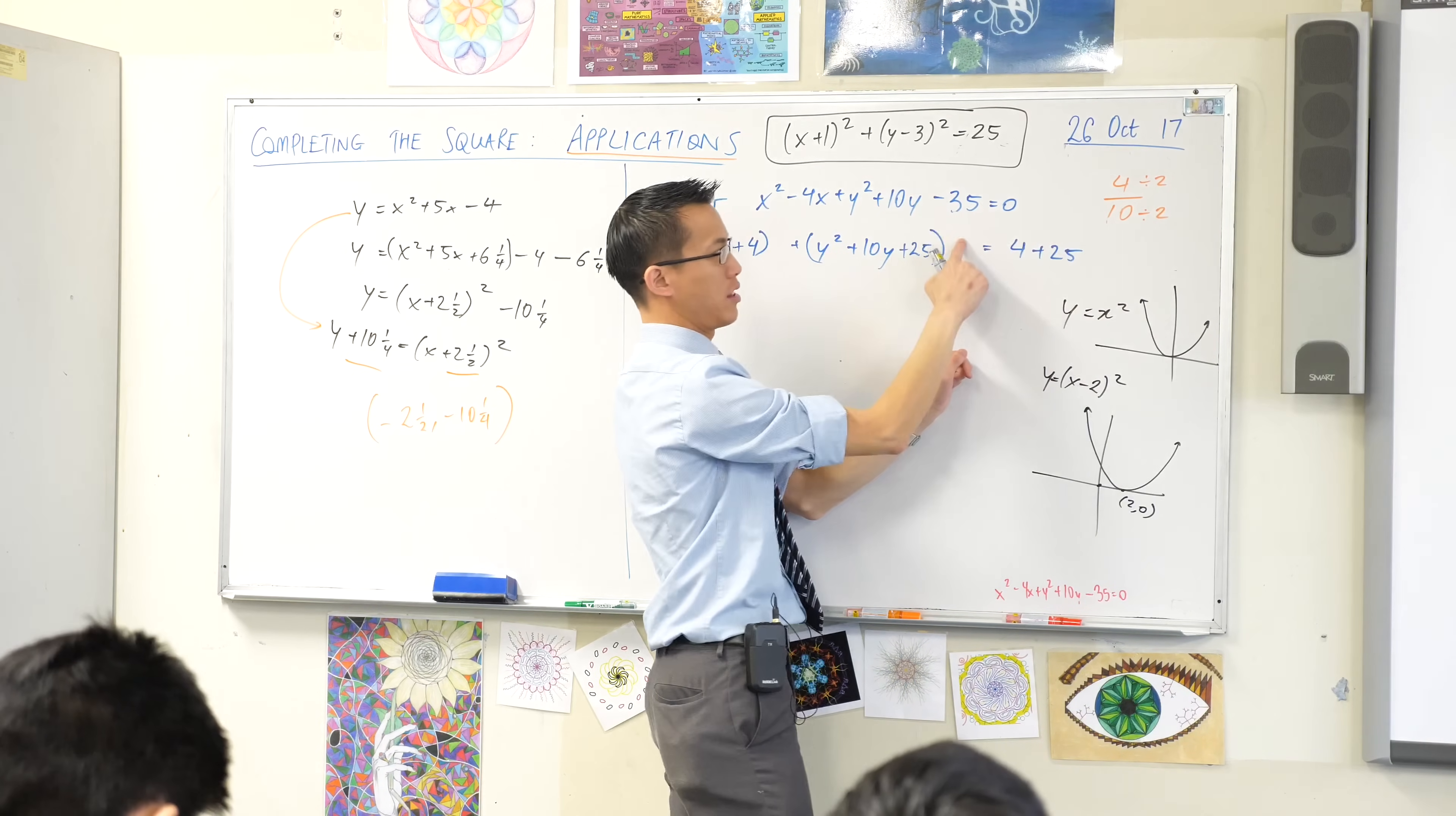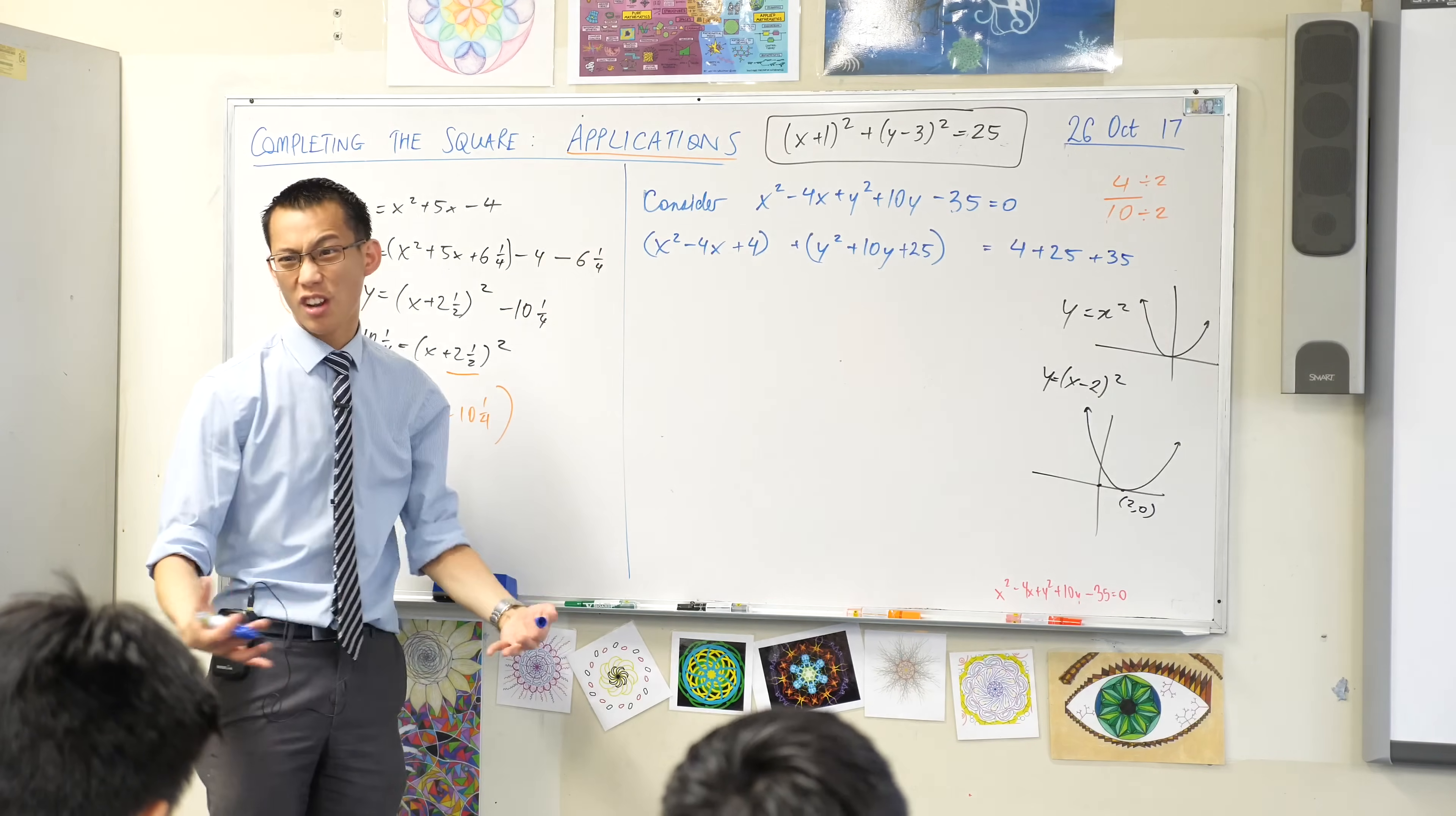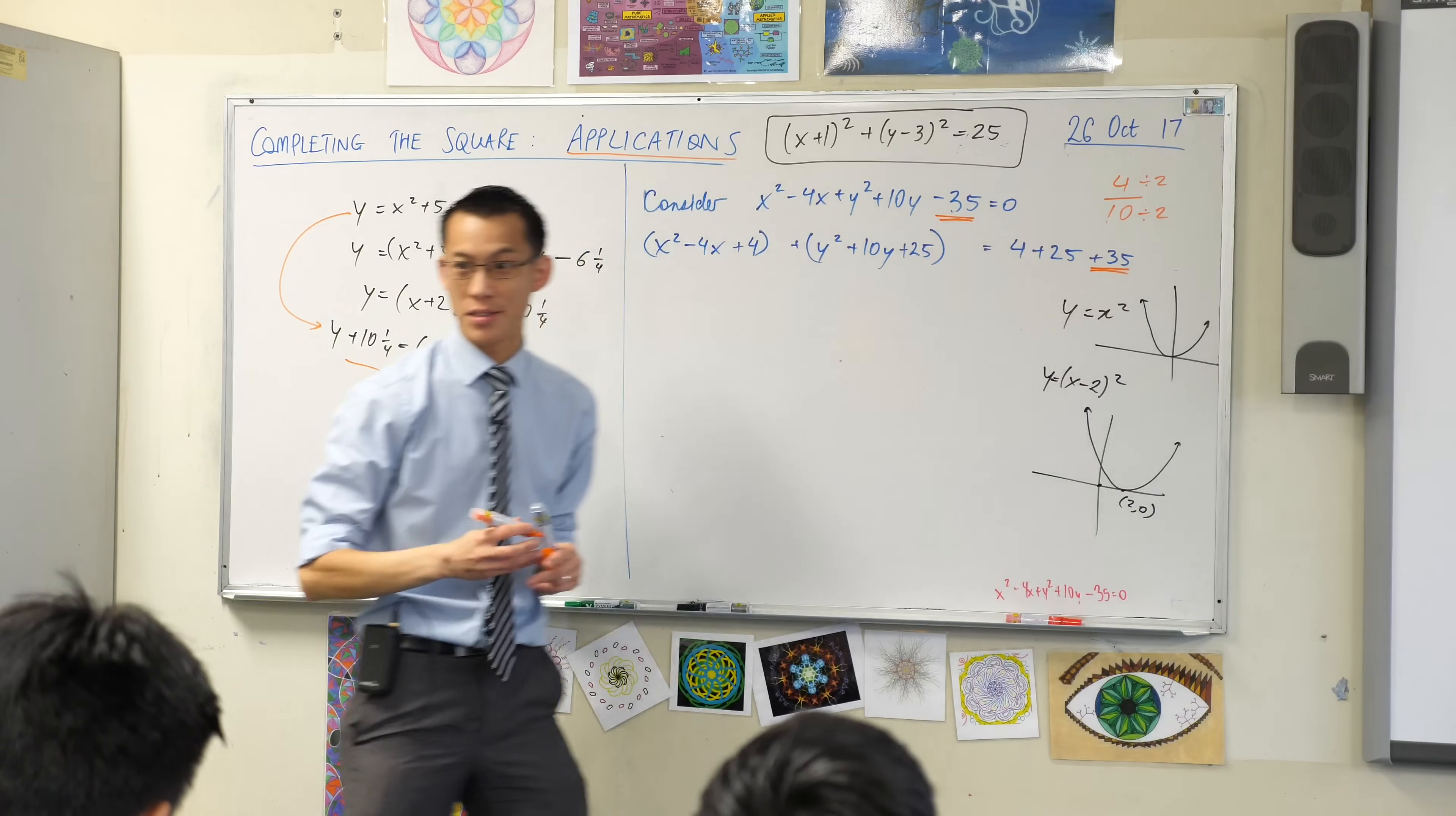It cancels with the minus 35 here, and it just becomes plus 35 over there. So I've done a lot of things on that line. I've done a lot of things because it's just a lot of equations. I've completed this square. I've completed that square, and I've put this number where it belongs, where it's on the right hand side.